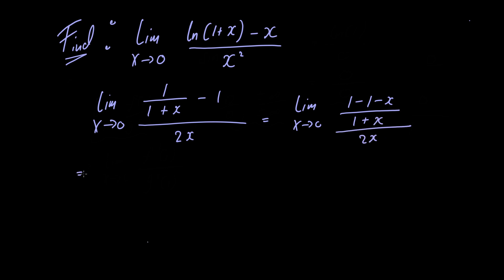Simplifying further we have the limit as x approaches 0 of minus x divided by 2x multiplied by 1 plus x. All we've done is cancel these ones and then multiply the denominator by 1 plus x to cancel this factor.